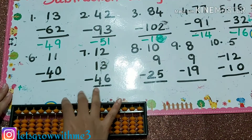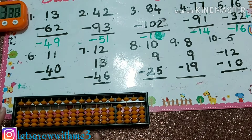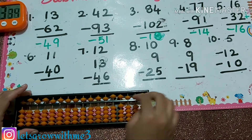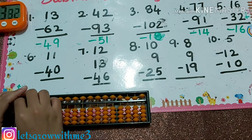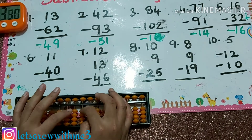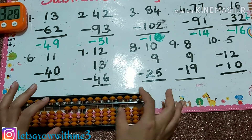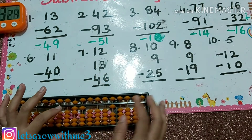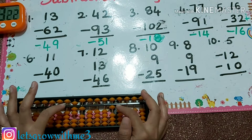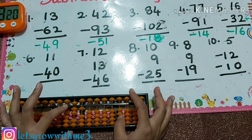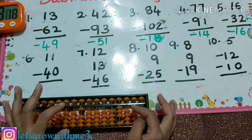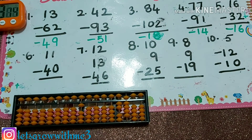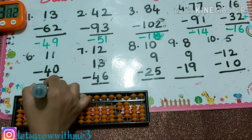Next: 11 minus 40. Starting with 11 on the abacus. Minus 10, minus 10, minus 10 plus 6, minus 10 plus 6, 0, minus 10 plus 3, minus 1: minus 10 plus 9. The partial answer is 29, so the result is minus 29.